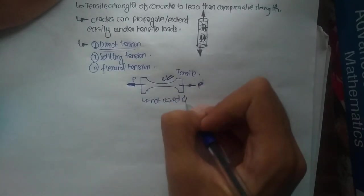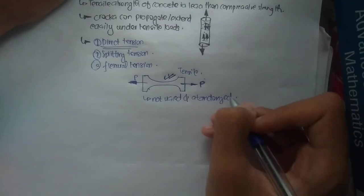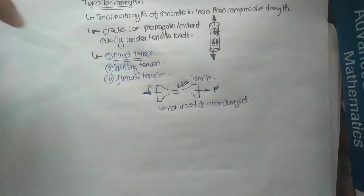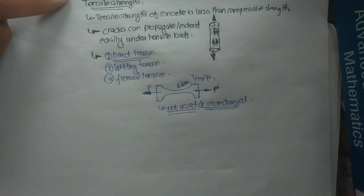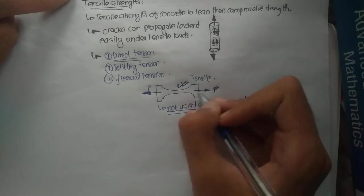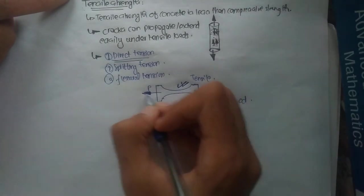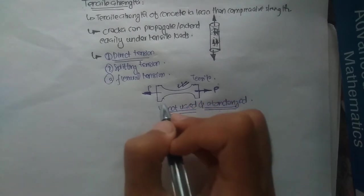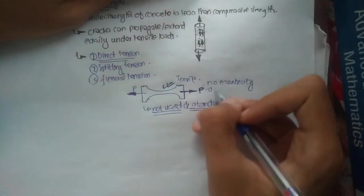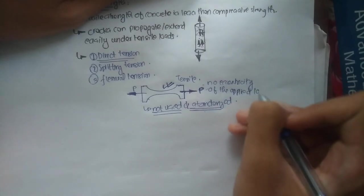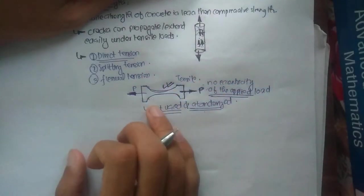The direct tension method is not used or standardized because it is not considered a practical test. It is rarely used because of the difficulty of gripping the specimen satisfactorily. While performing this test, the specimen cannot be gripped satisfactorily, and there must be no eccentricity of the applied load, which is very hard to achieve. The specimen cannot be easily grabbed and pulled.